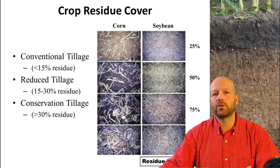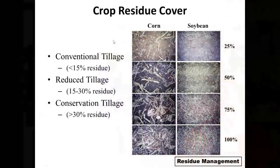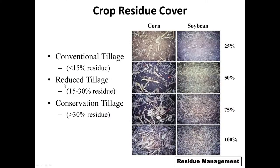Another way to classify tillage equipment is by the amount of residue left on the soil surface. We call tillage equipment 'reduced tillage' if it leaves about 15 to 30% residue on the surface. Something that leaves less than that we call conventional. Something that leaves more than 30% residue is what we call conservation tillage. Thirty percent or more residue on the soil surface will lead to a reduction in erosion potential of up to 50% — that's why we call it conservation tillage.